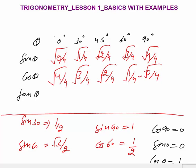Tan is simply sine divided by cos. So tan 0° = 0/1 = 0. Tan 30° = (1/2)/(√3/2) = 1/√3. Tan 45° = 1. Tan 60° = √3. Tan 90° = sine 90°/cos 90° = 1/0 = infinity. You must remember sine, cos, and tan for the basic angles 0°, 30°, 45°, 60°, and 90°. That was all about Trigonometry Lesson 1 basics with examples.